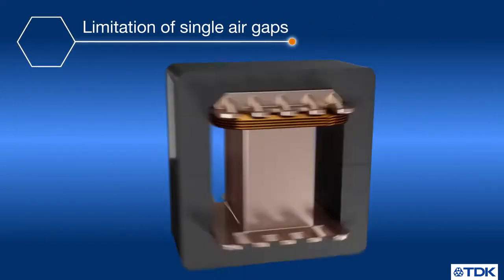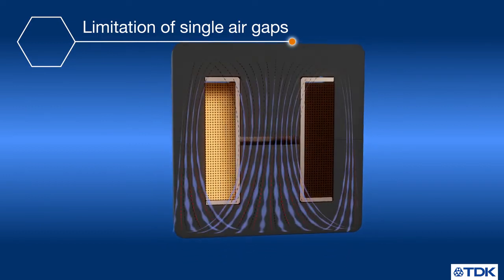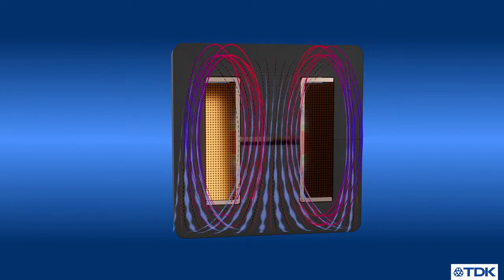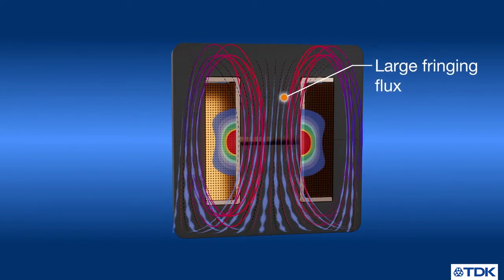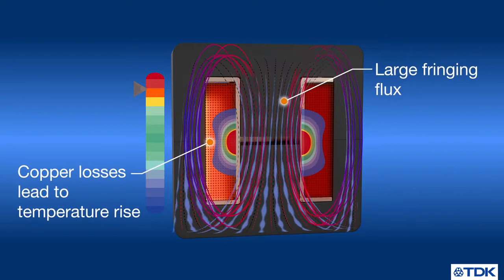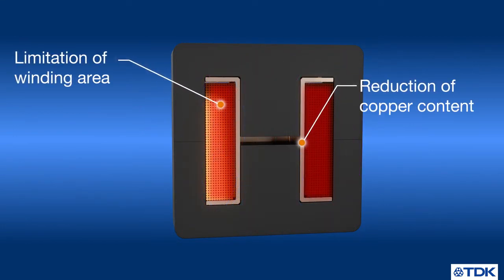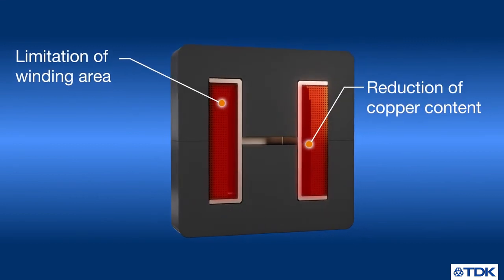Designs with a large single air gap have several limiting factors. Large fringing flux emitting from the air gap spreads into the winding area. This leads to copper losses and thereby to a temperature rise. As a result, the usable winding area is limited and the copper content must be reduced.